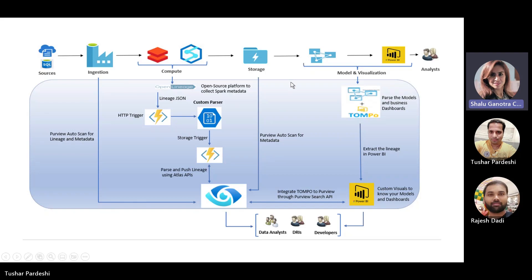In this data pipeline, Rajesh will cover the demo of Spark lineage for Synapse called Sparklin, and then the reporting layer — that is the Power BI and AS lineage called Tompo — will be covered by Tushar. So handing over to Rajesh here.